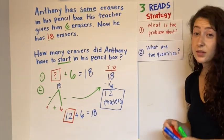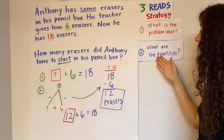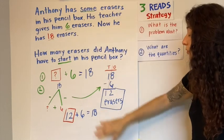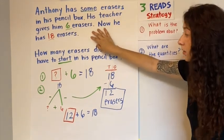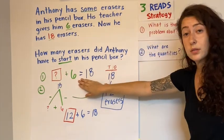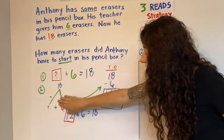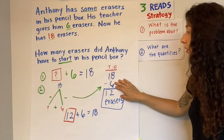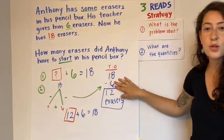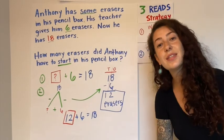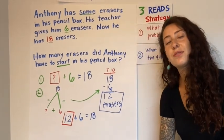So that is how you use the three reads to be able to figure out what your problem is asking you in order to know how to write that horizontal equation and start figuring out with your math mountain or your vertical equation of what that unknown is. Thank you for watching this video and go ahead and go on Seesaw to practice for yourself. Bye!